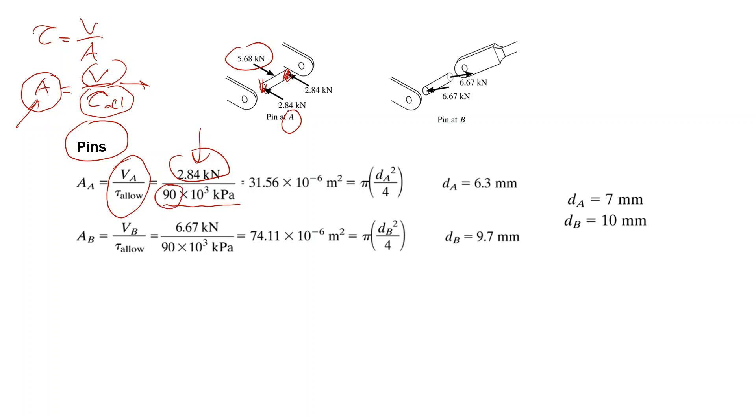The force is 2.84 kN, allowed shear stress is 90 MPa converted to kilopascals. So the result is 31.56 × 10⁻⁶ meter square. Since the area is a circular area, it is πd²/4, and with the help of this equation you can determine the minimum diameter as 6.3 mm.